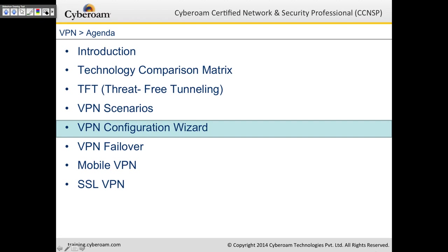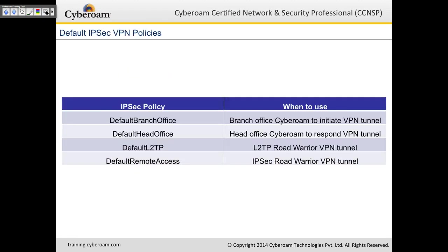Let's look at the VPN configuration wizard. To make life simple, CyberROM provides a wizard. There are certain default IPSec VPN policies: a default branch office policy (used when the branch office CyberROM initiates the tunnel), a default head office policy (when the head office CyberROM responds), a default L2TP policy for L2TP road warrior VPN, and a default remote access policy for IPSec road warrior VPN.